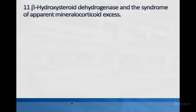The treatment was simple: stop eating the licorice. Once the person stopped, blood pressure returned to normal — he was just eating way too much licorice. This also explains why people with Cushing's get high blood pressure: they overproduce so much cortisol that this enzyme cannot inactivate all of it, so it binds to the mineralocorticoid receptor, causing increased sodium reabsorption and leading to high blood pressure.